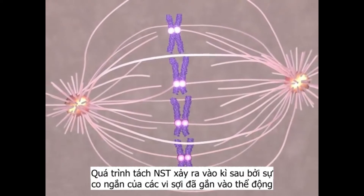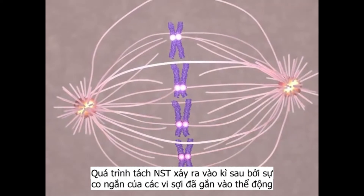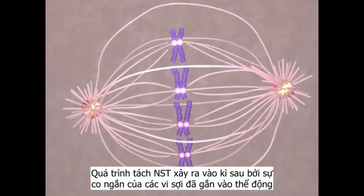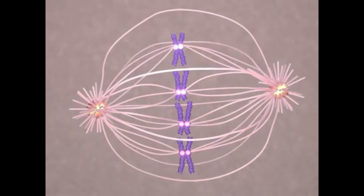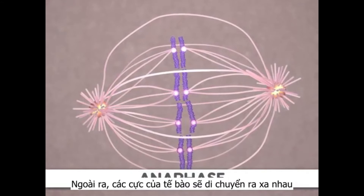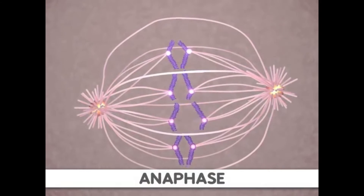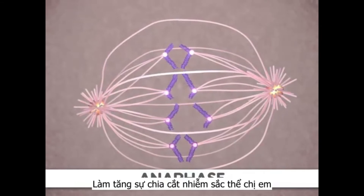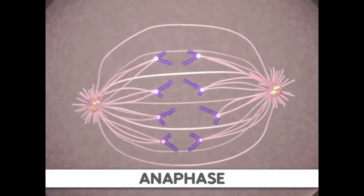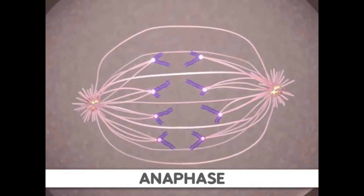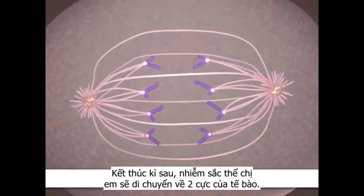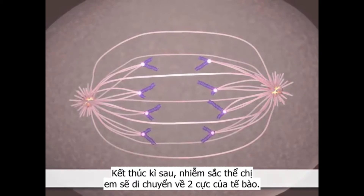Separation occurs during anaphase through a shortening of the microtubules attached to the kinetochores. Additionally, the poles of the cell move farther apart, causing increased separation of sister chromatids. At the end of anaphase, the sister chromatids have moved to the two ends of the cell.